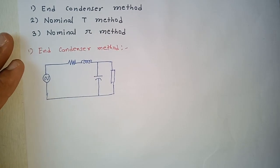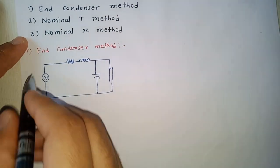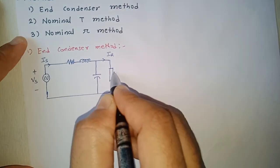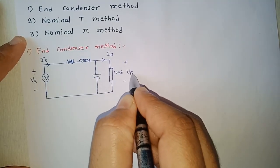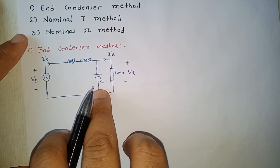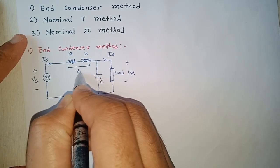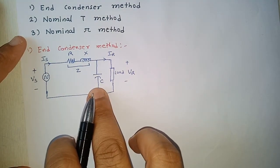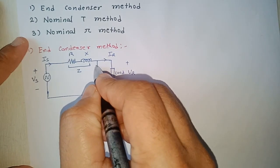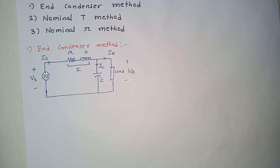This is the per-phase circuit diagram of the medium transmission line using the end condenser method. Vs is the sending end voltage, Is is the sending end current, Ir is the receiving end current, and Vr is the voltage across the load. The capacitor (condenser) is located at the receiving end — that is why this method is called the end condenser method. R is resistance, X is reactance, together forming impedance Z. The capacitor current is Ic.